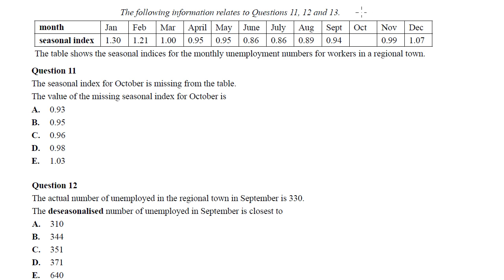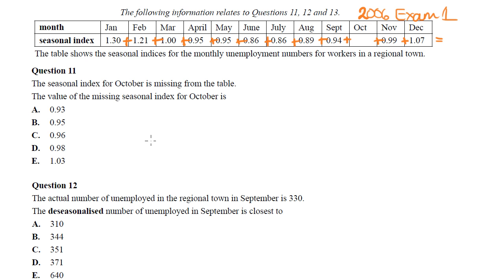Here's how seasonal index questions look on an exam — this is from the 2006 Exam 1. Questions 11, 12, and 13 relate to a seasonal index table showing monthly unemployment numbers for a regional town. The seasonal index for October is missing. Since the indices must add up to 12 (monthly data), October equals 12 minus the sum of all other indices, giving 0.98 — answer D.